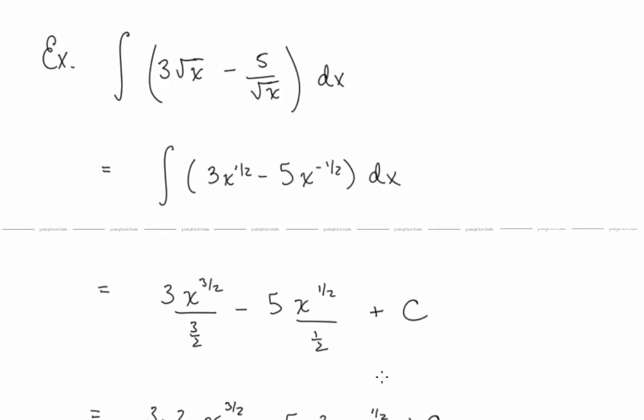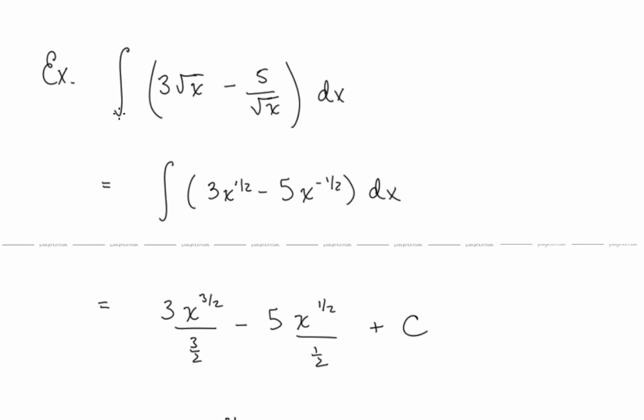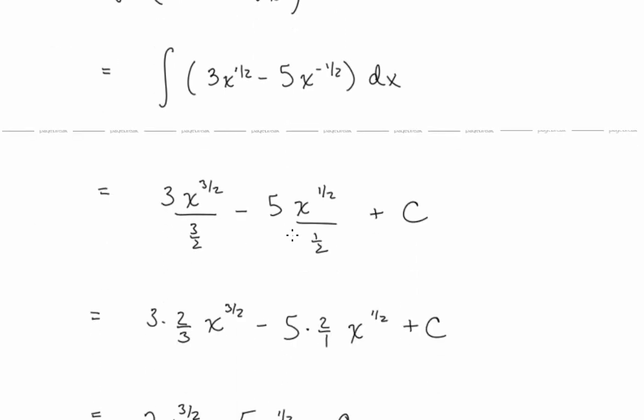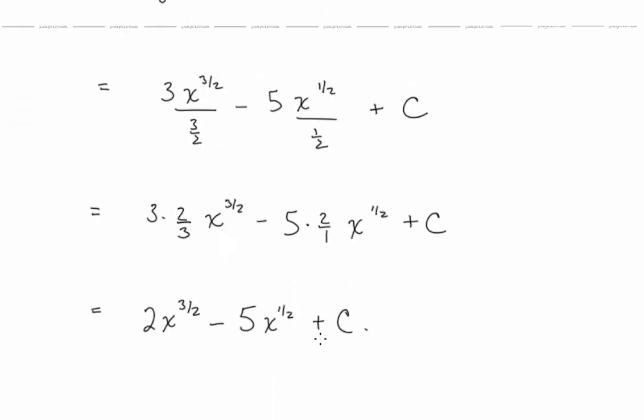So again, without the upper and lower bounds here, we have no numbers at which we want to evaluate the antiderivative. So we're just giving the general antiderivative here, including the constant c. So we always want to have the plus c with the indefinite integrals.